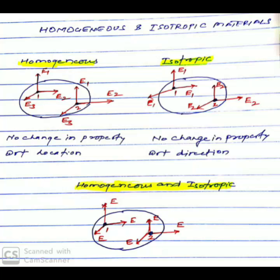In the second diagram for isotropic material, we can observe that at locations one and two, the properties are the same with respect to direction. However, it is changing with respect to location. Such material is known as isotropic material.